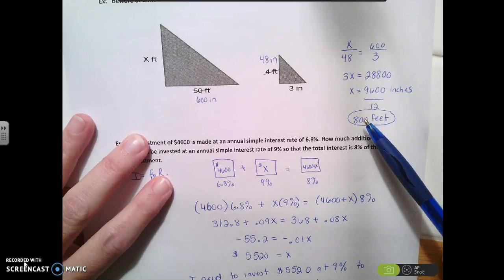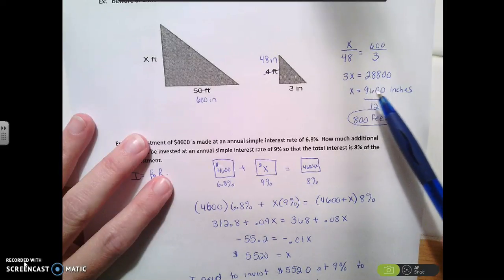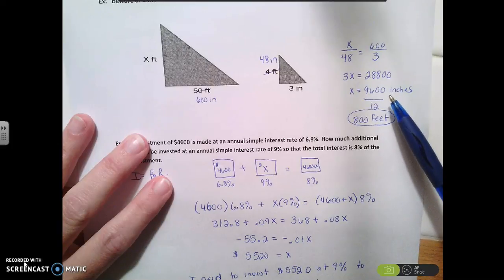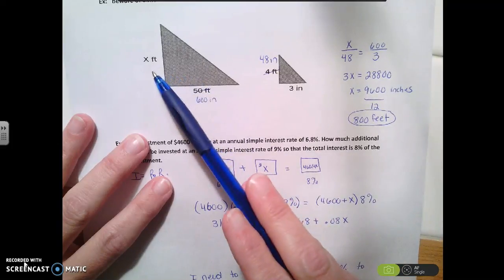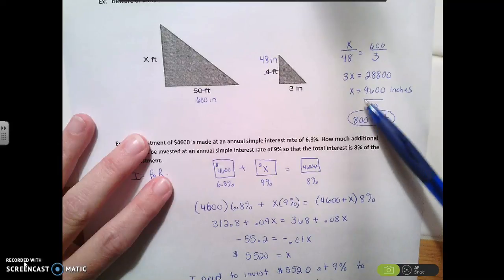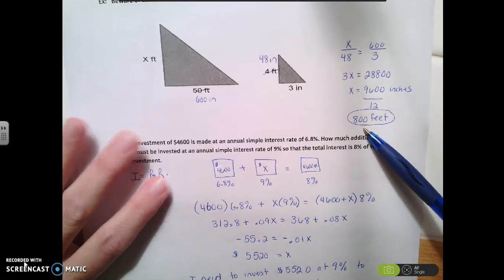Okay. Oh, I'm sorry. We end up with 9,600 inches, but the answer here is supposed to be in feet. So we divide that by 12, and we get 800 feet. Sorry.